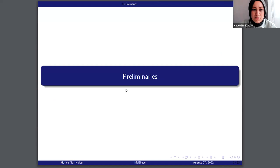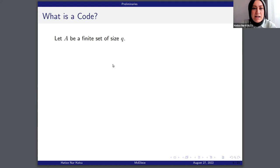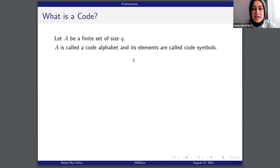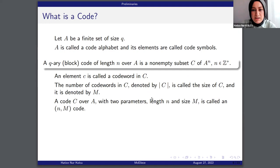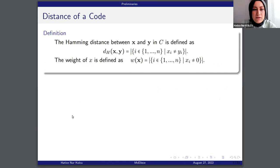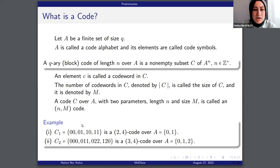Firstly, I will give definitions. What is a code? Let A be a finite set of size Q. A is a code alphabet and its elements are called code symbols. A q-ary block code of length N over A is a non-empty subset of A to the N. An element C is called a codeword in C. The size of C is denoted by M and is called an (N, M) code. We have two basic examples: the first example has length two and four codewords, and the second has length three and four codewords.